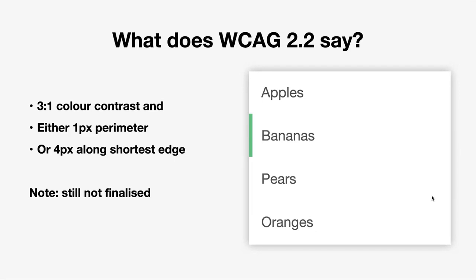So the example on the right with a green edge might seem to comply, but it actually wouldn't — because that green and the white aren't 3 to 1 contrast. So that would in fact fail. Anyway, a new thing to bear in mind. A quick recap: your text must contrast clearly with backgrounds, focus states should have high contrast, hover states can be much more subtle. The hover state is not an accessibility requirement — it's more of a usability enhancement. And WCAG 2.2 will soon enforce stricter requirements for focus contrast, so I recommend getting ahead of those.